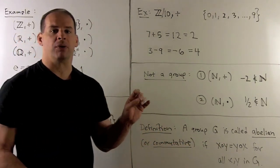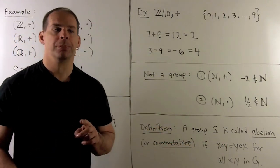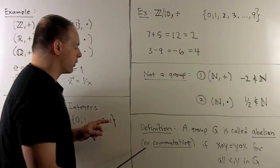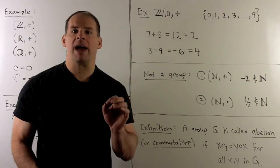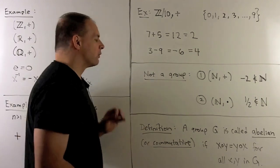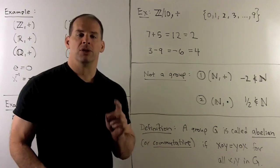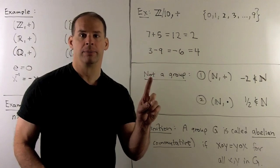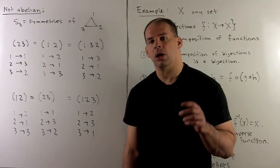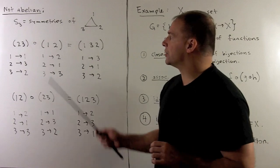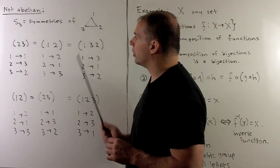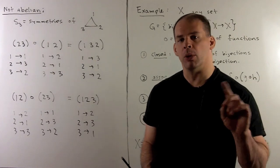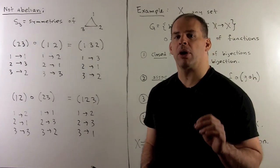A special property for every group that's on this board: I'll call a group abelian or commutative if x times y equals y times x for all x and y in the group. This just says it doesn't matter what order we multiply things in. We can shuffle things around. We've already seen an example that's not abelian: the symmetries of the equilateral triangle. We'll take two elements (1,2) and (2,3), multiply in either order, and show that the products are not equal.